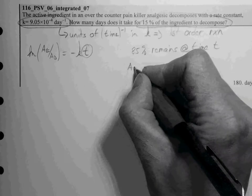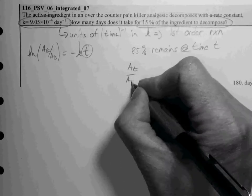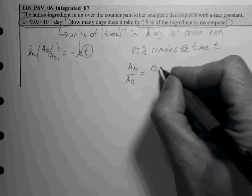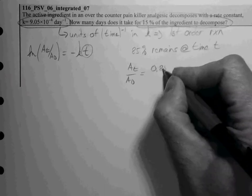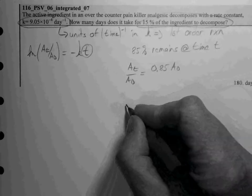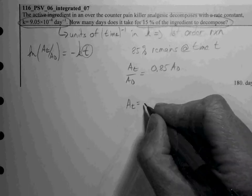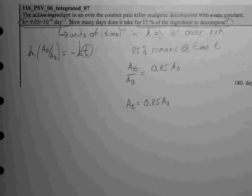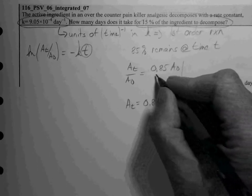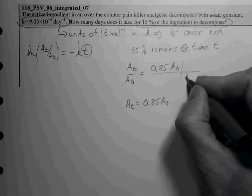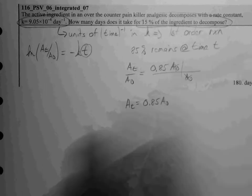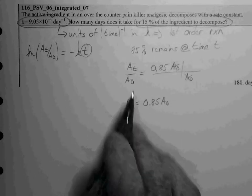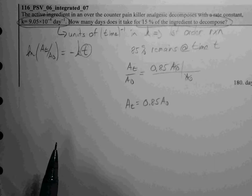So our ratio of AT to A0 is going to be equal to 0.85 times A0, because that's what AT is equal to. That's 85% of the initial amount. And we're going to divide that by the initial amount. So our initial amount cancels out. AT to A0 is 0.85.